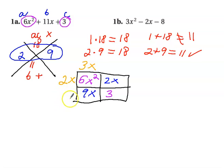Now 3x times what value would give us 9x? In other words, 9x divided by 3x. So 3x times 3 equals 9x. And 2x times what value is going to equal 2x? It's going to be 2x plus 1, so 2x times 1 is going to be 2x.